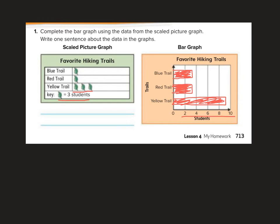That shows the yellow trail as their favorite. So one sentence about the data. The yellow trail is the most popular trail. Because the most kids picked that. There's my period. Don't forget your period. Don't forget to start with capital letter. All right, let's move on.